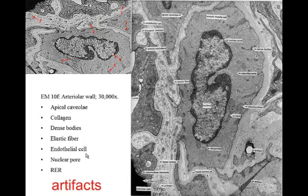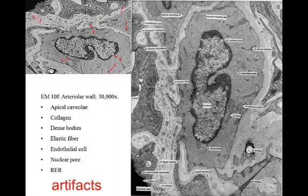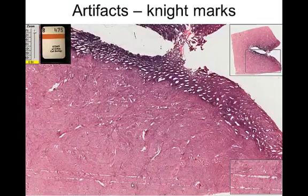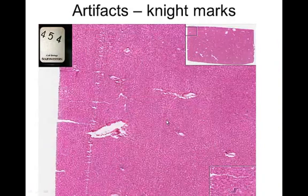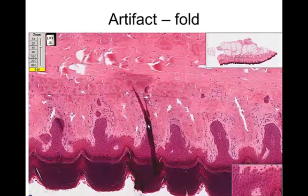Now we need to be mindful of artifacts — man-made structures. Here you can see a grid bar in the electron micrograph that should not be there, and a hole that should not be there. When you put your tissue on an electron microscopic grid, there's always a possibility a grid bar gets in your way. Here we can see knife marks — man-made structures that should not be there — as well as additional knife marks and chatter. Sometimes tissue can fold or pieces can be ripped out. These are all artifacts.